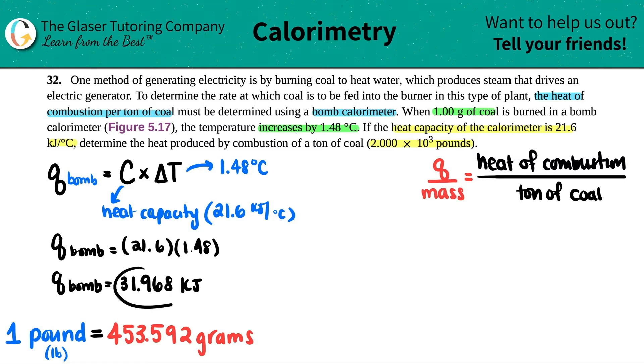Now, technically, this is the amount of heat that is required when one gram of coal is burned. So this amount, kilojoule, this would basically be over one gram of the coal. But we want it in a ton of coal. So basically, we have to do a conversion. We have our number 31.968 in units of kilojoules per one gram of coal.